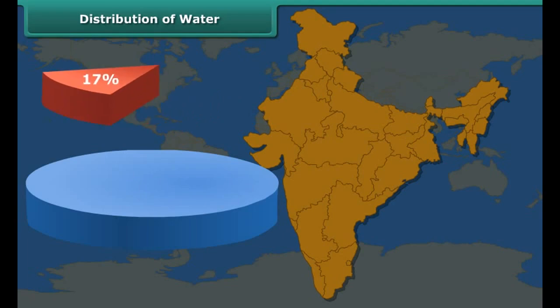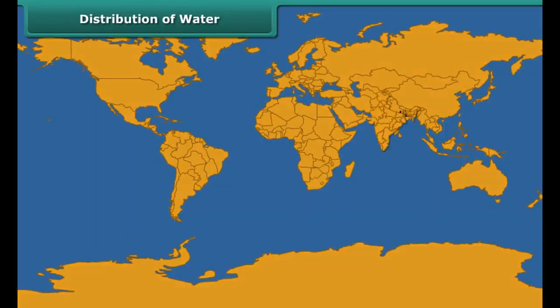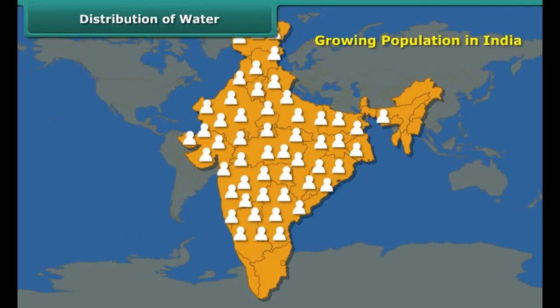17% of the total world population is in India. But to support it, India has only 4% of the world's freshwater resources. As a result, India is facing acute water shortage. The situation is likely to worsen with population growing at a fast pace.